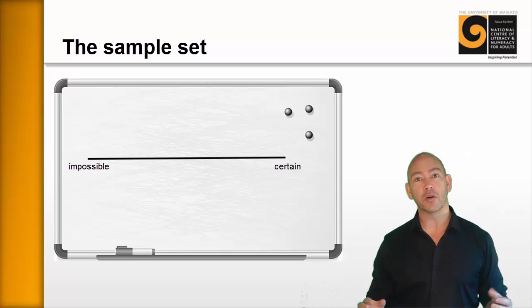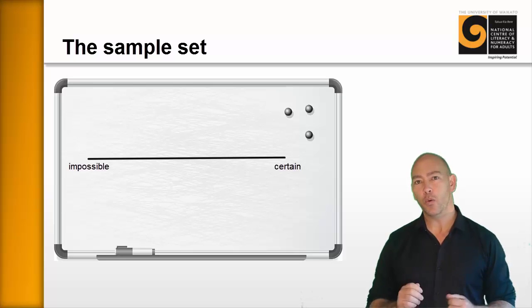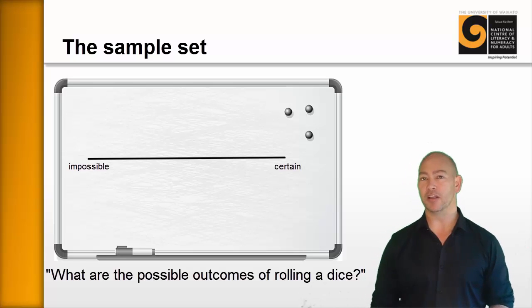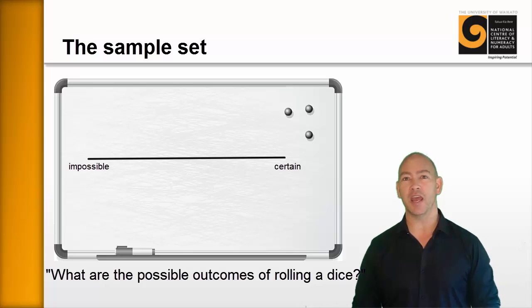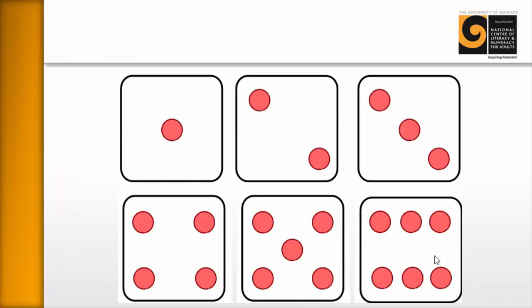So now we're going to talk about the sample set. Ask the learners, what are the possible outcomes of rolling the dice? Like how many different options can we have? That is the sample set. So they'll know that a 1 can be rolled, a 2, a 3, and so on, all the way up to 6.